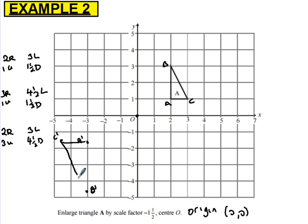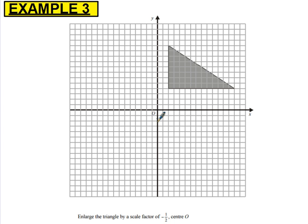So the new triangle is just there. Notice that one of the things that happens when you have a negative scale factor is that the triangle or the shape is upside down.